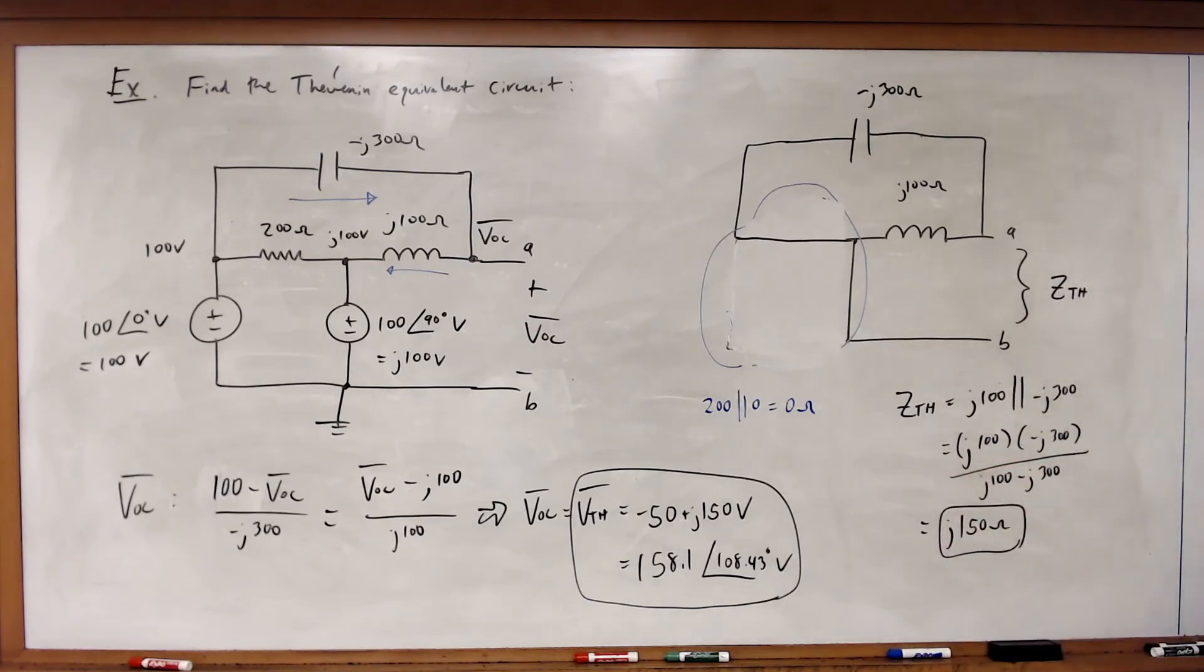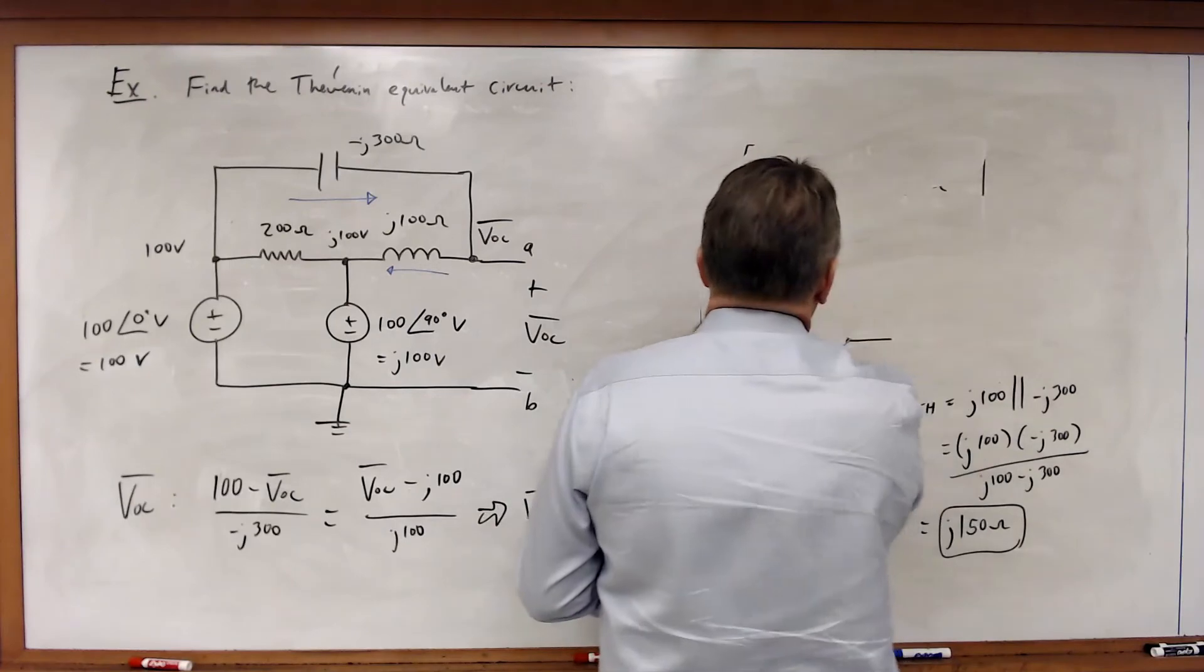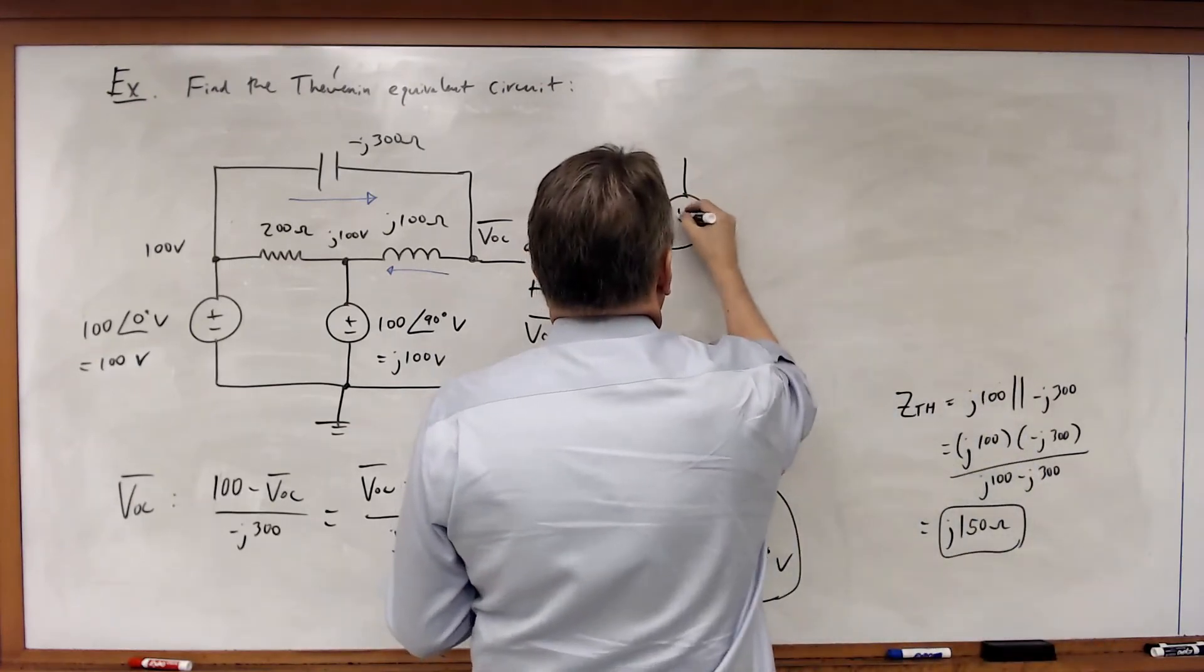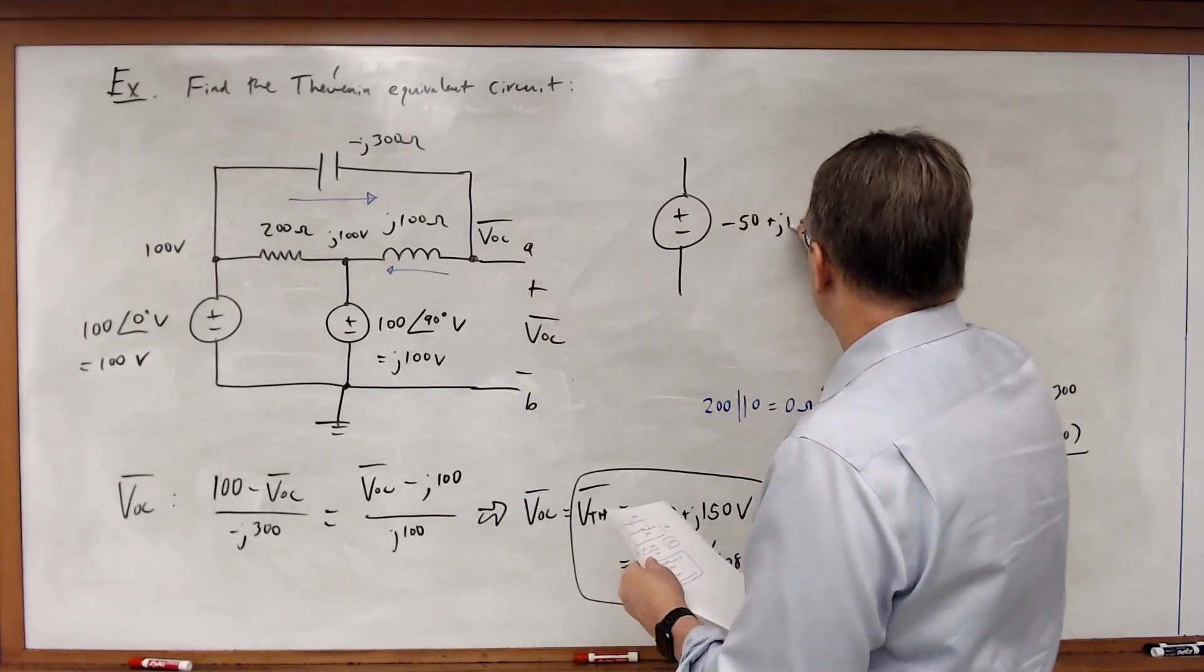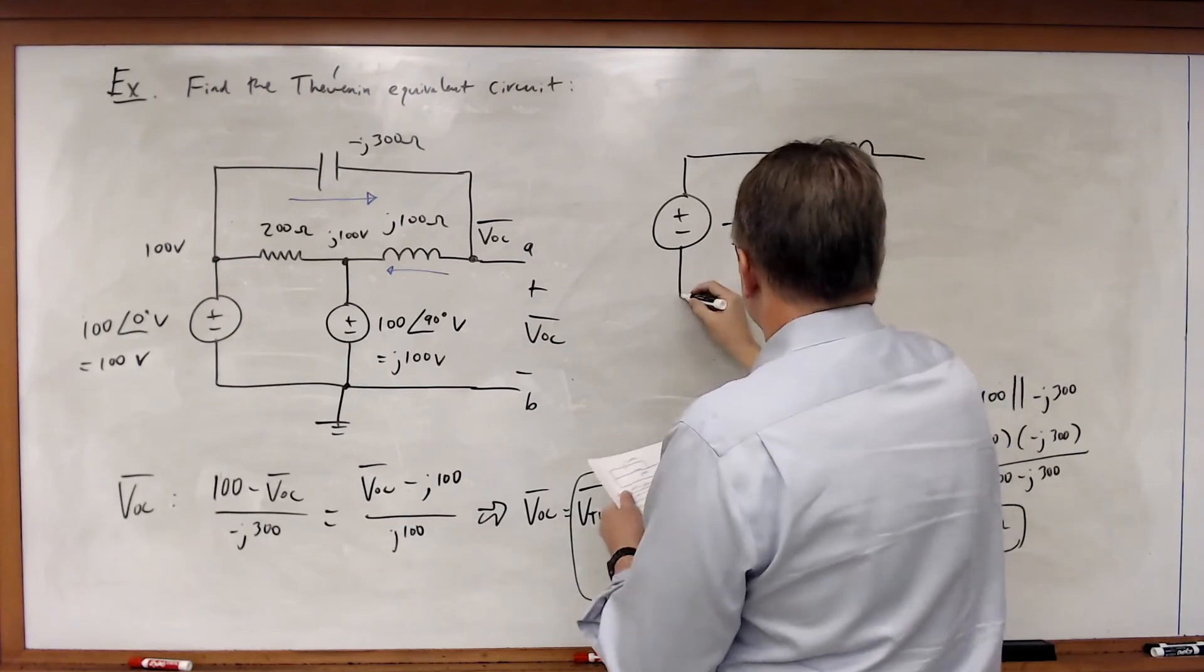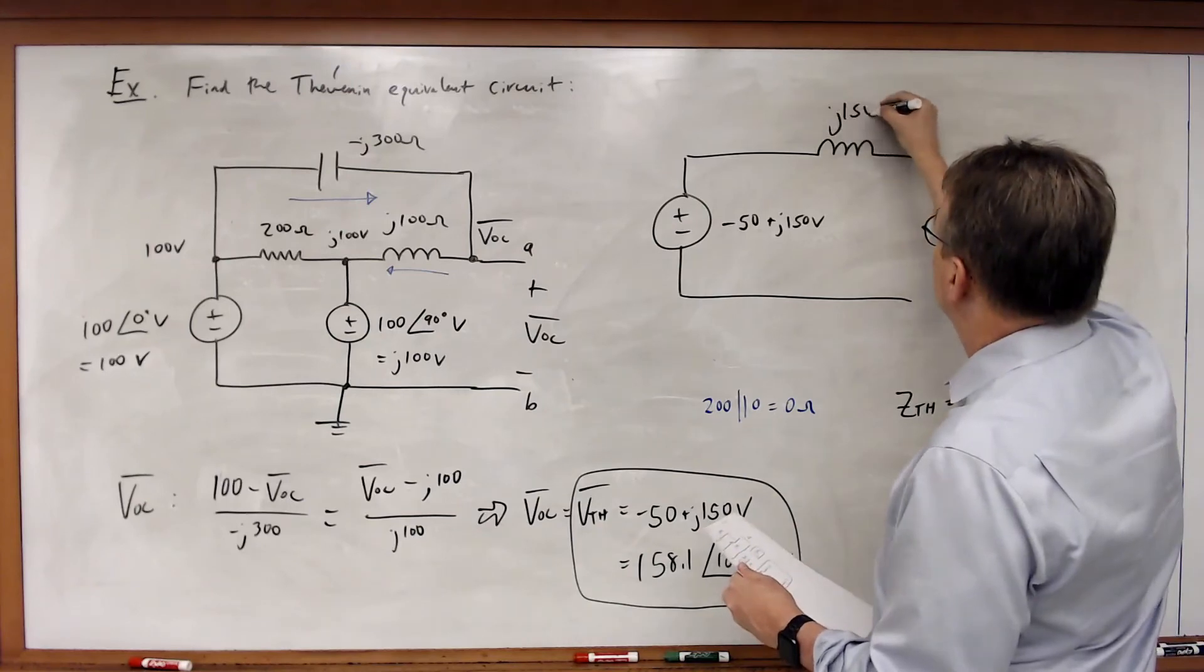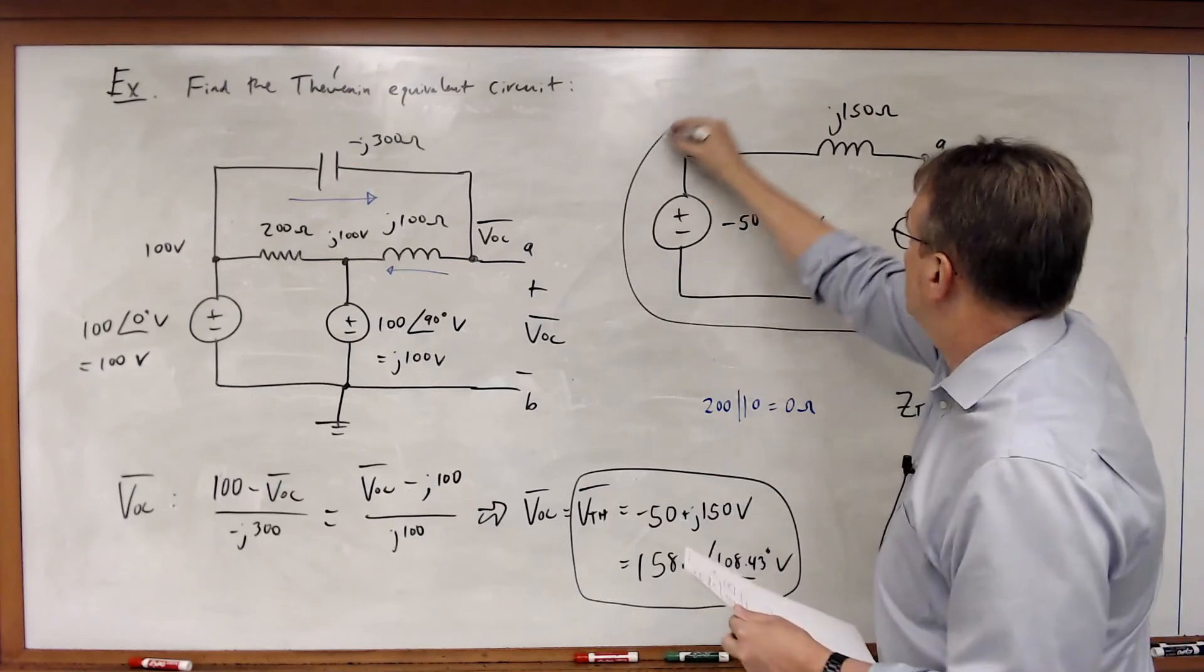And there's your Thevenin equivalent impedance. So what you've really got is this: your Thevenin equivalent circuit looks like a voltage source of -50 + j150 volts in series with just an inductor. There's no real part to this, so all we have is j150 ohms. And there's our Thevenin equivalent circuit.